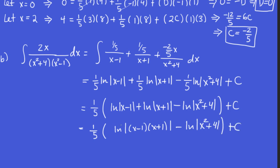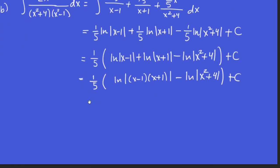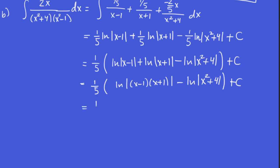And then we have logarithm, a difference of logarithms, and that can be transformed into a quotient, right? So we could write 1 fifth ln, big absolute values, x minus 1 times x plus 1, all over x squared plus 4, plus c.